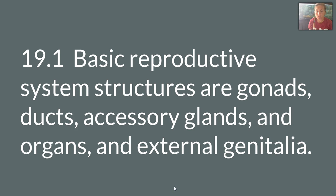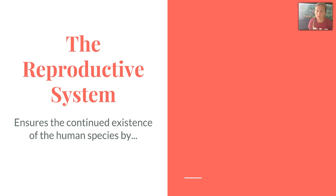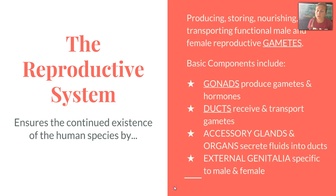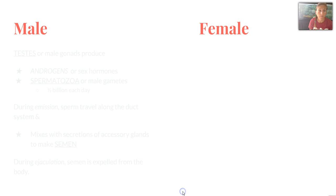The first section of the chapter talks about basic reproductive parts. This system ensures the continued existence of the human species by producing, storing, nourishing, and transporting functional male and female reproductive gametes, which are our sex cells. The basic components include our gonads, ducts, accessory glands and organs, and external genitalia specific to the male and female.